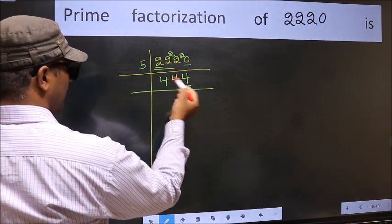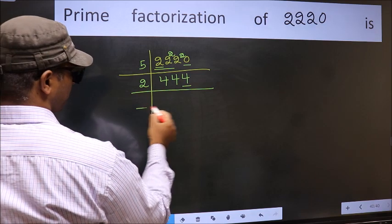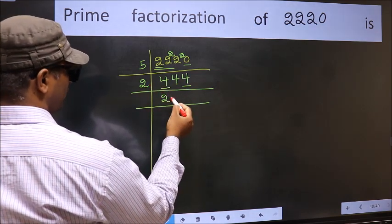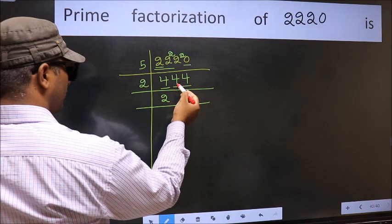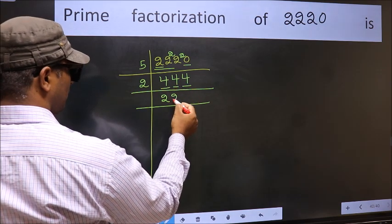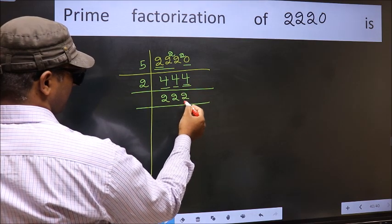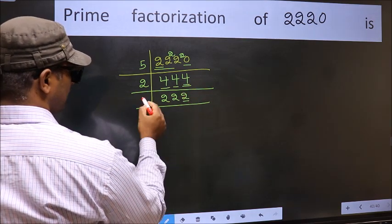Now the last digit 4, so take 2. First number 4. When do we get 4 in 2 table? 2 times 2 is 4. Next number 4, again 4 so write 2 again. Next number 4 so write 2 again. Now the last digit 2, so take 2.